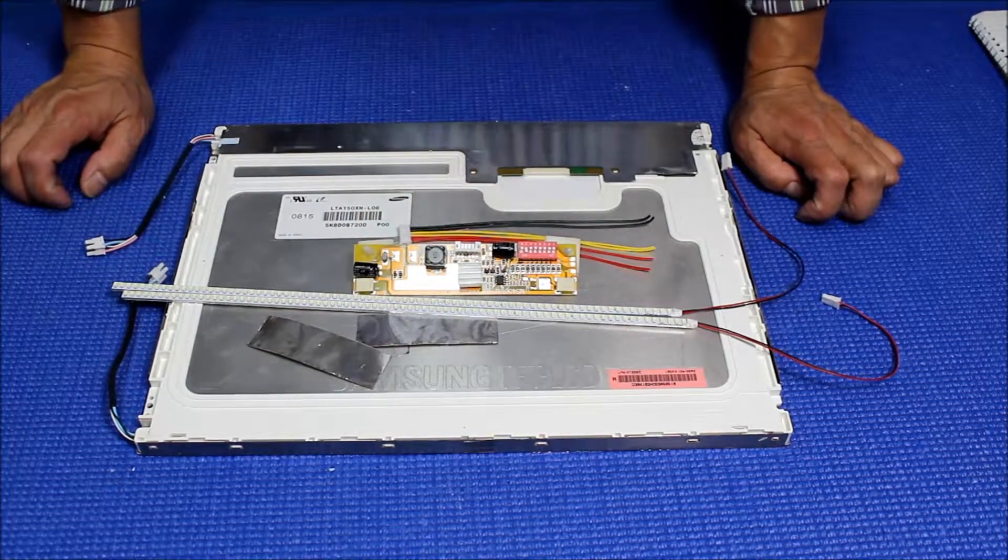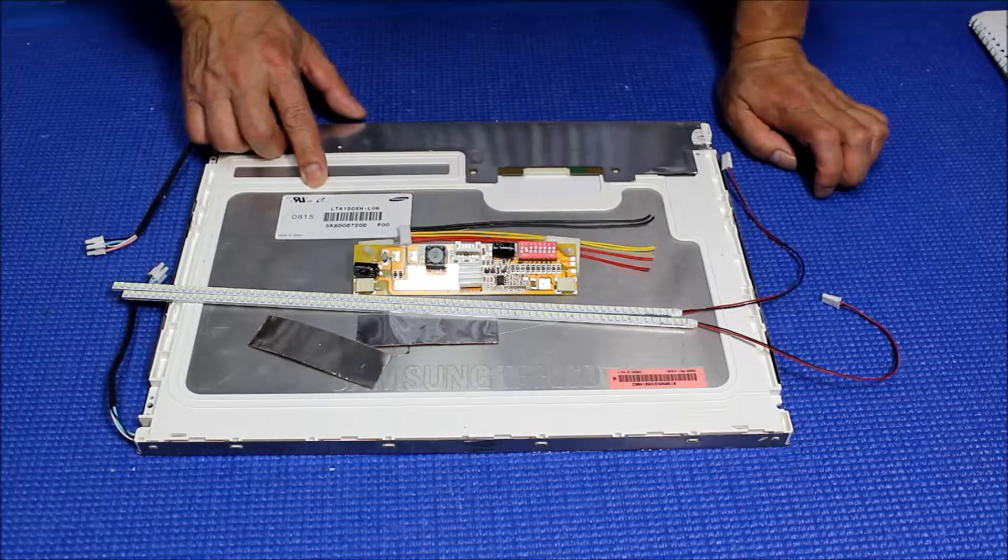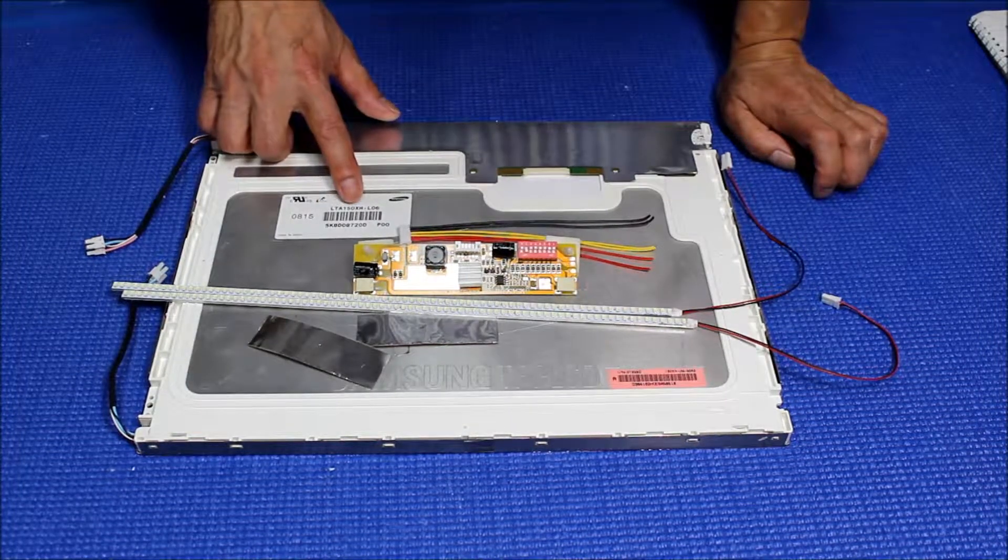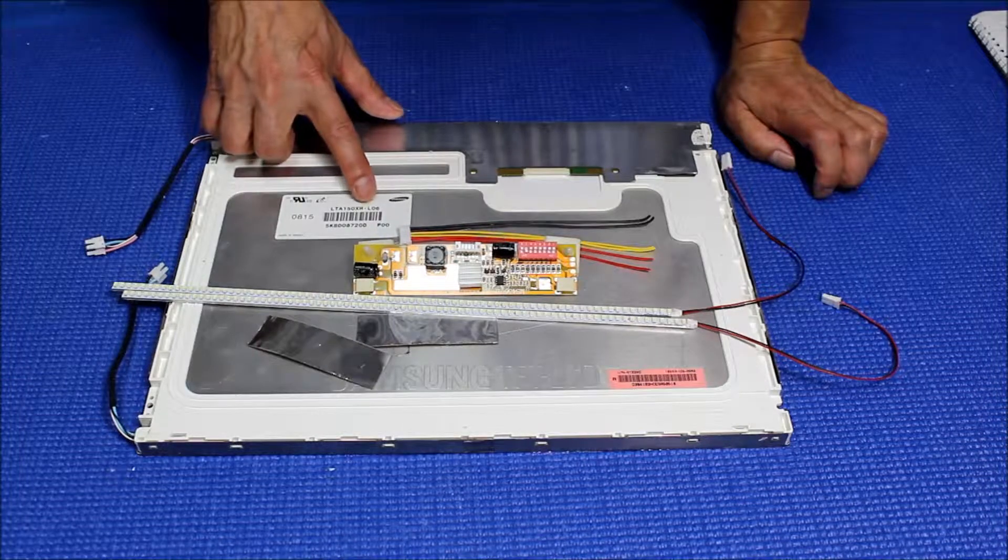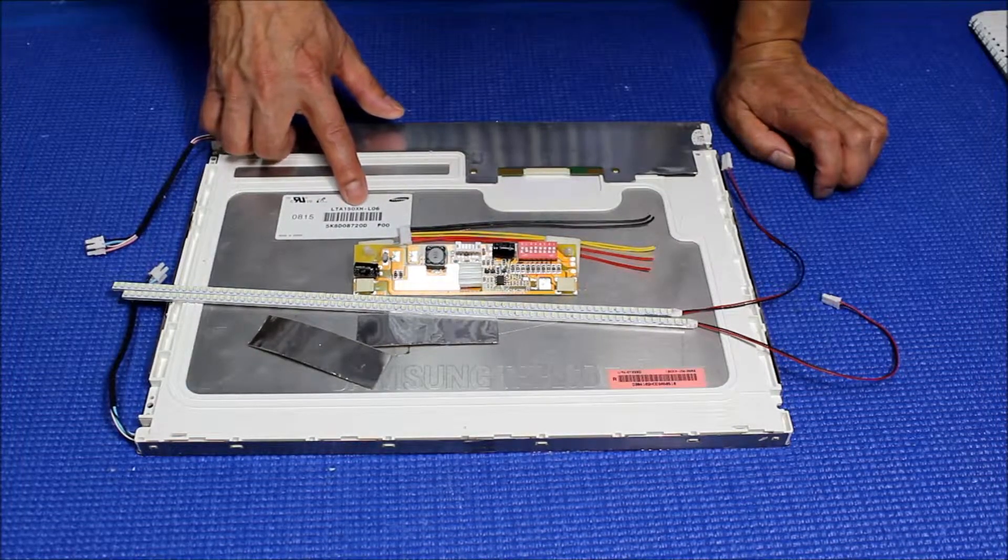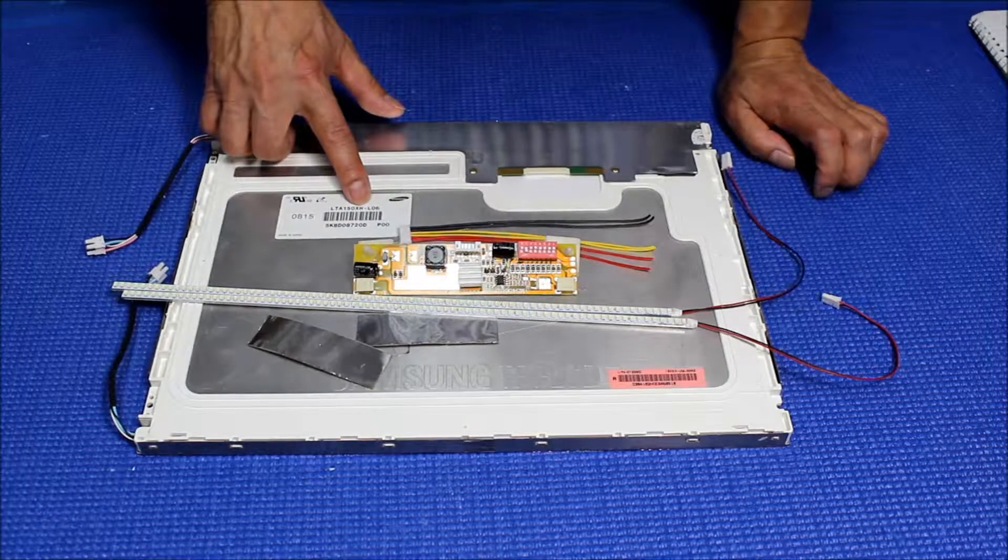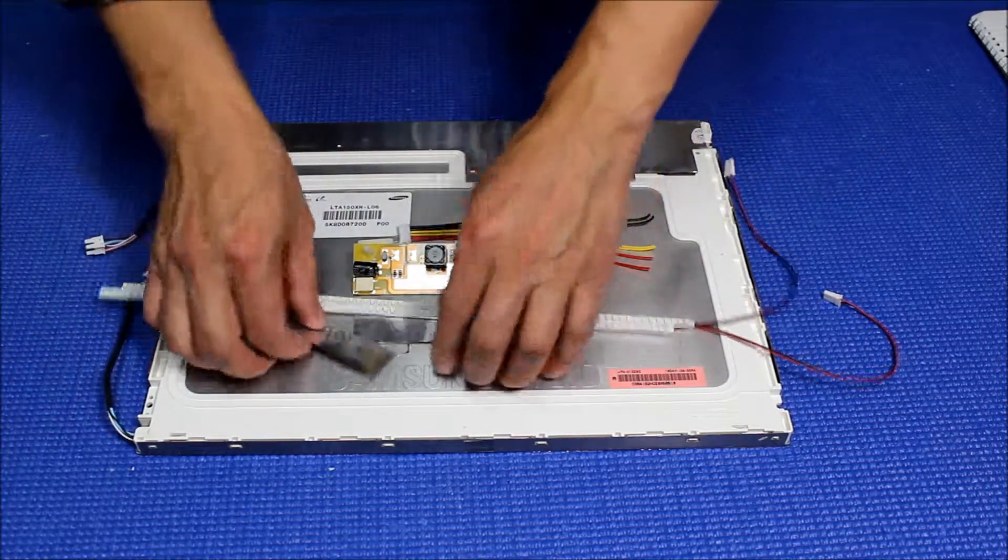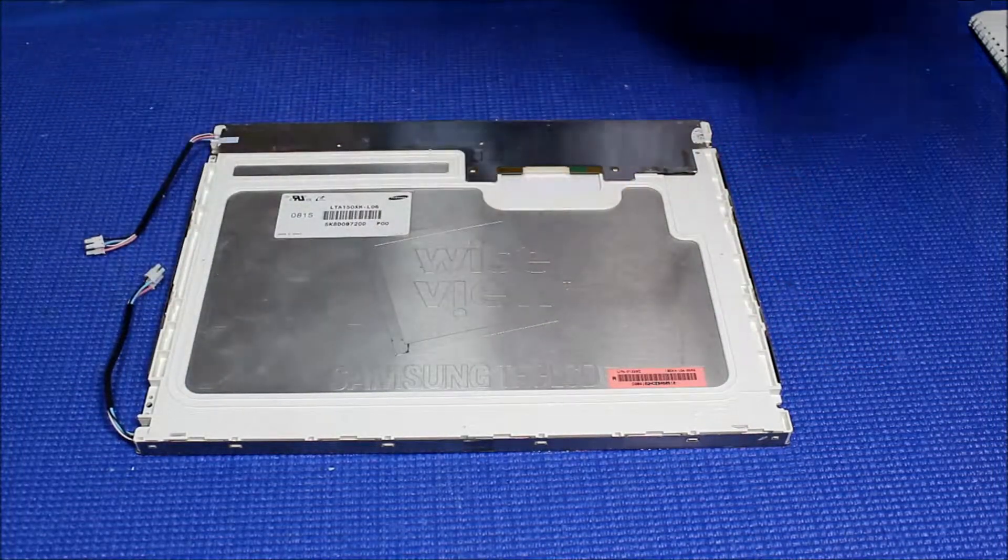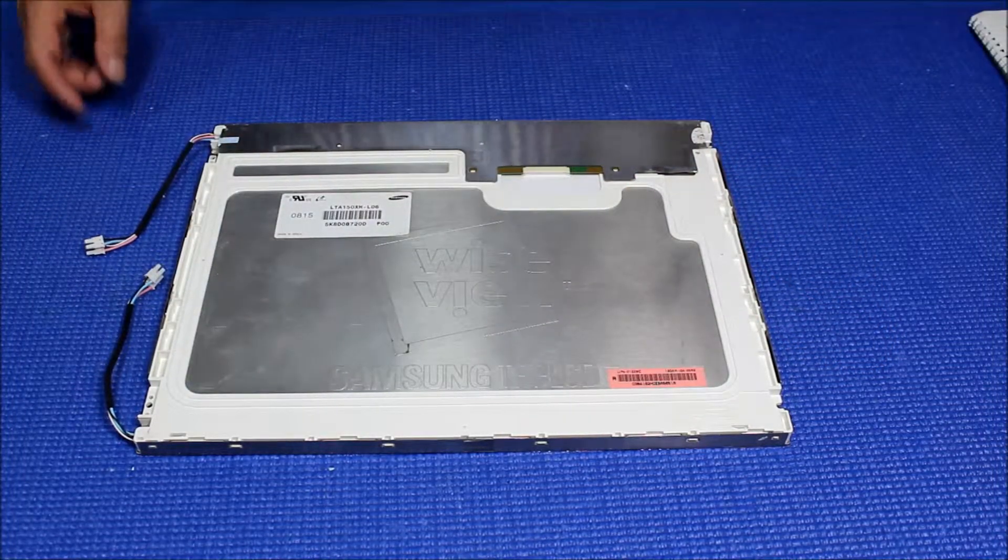We covered our aluminum foil. This screen is made by Samsung. The screen part number is LTA150XH-LO6. This is a 15-inch foil lamp used on industrial controls. It's a really popular screen in industrial applications.